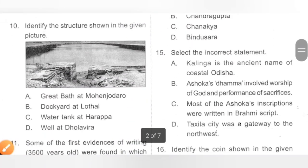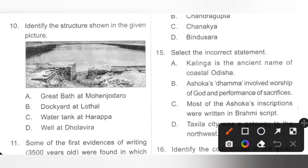Question 10: Identify the structure shown in the given picture. A. Great Bath at Mohenjo-daro, B. Dockyard at Lothal, C. Water tank at Harappa, D. Well at Dholavira. The structure shown is the Dockyard at Lothal. Lothal is a Harappan site located in Gujarat. Option B is the correct answer.